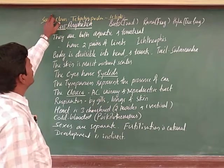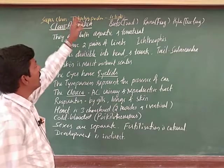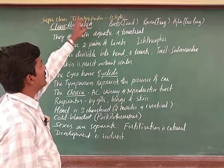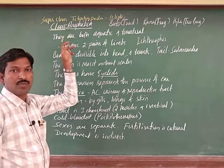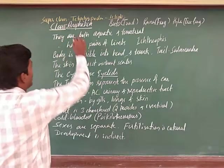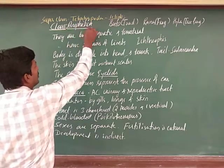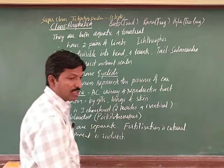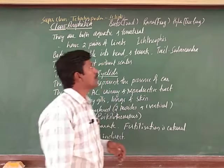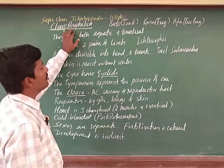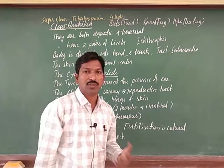One of the important features is that these are the first animals which come outside the water. That group in superclass Tetrapoda is Amphibia. Amphibia examples include mainly frogs.